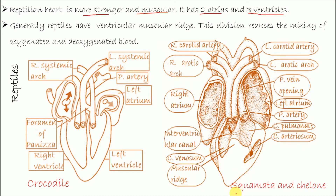In case of Squamata and Chelonia, this one is the right atrium and this one is the left atrium. Here it is single ventricle, but this ventricle is divided into some compartments by muscular ridge.